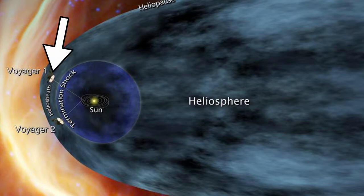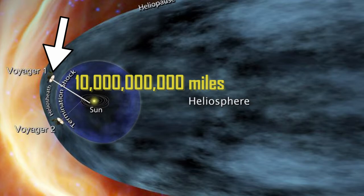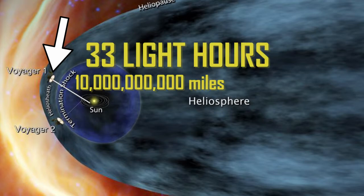Located about 120 astronomical units or 10 billion miles away, if Voyager 1 were to send a message right now, it would take scientists here 33 hours to receive it.